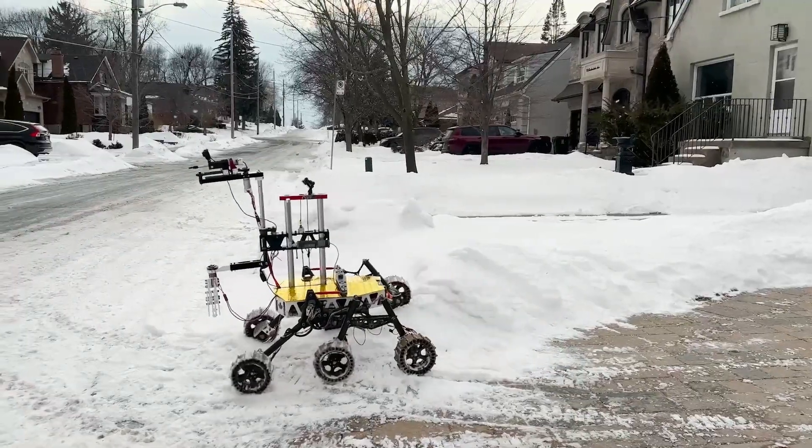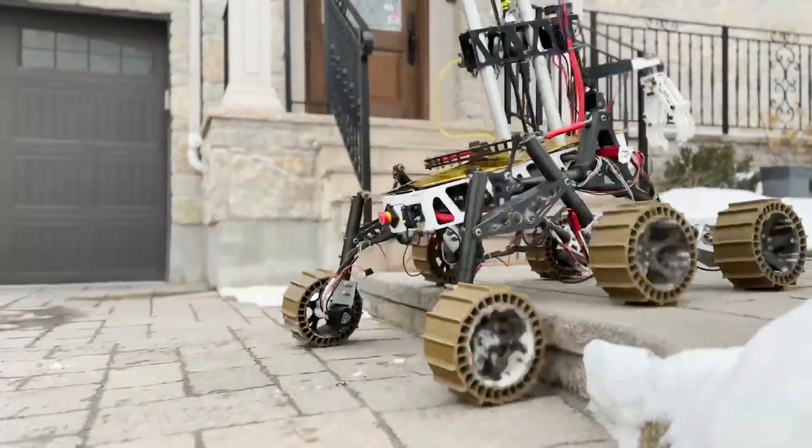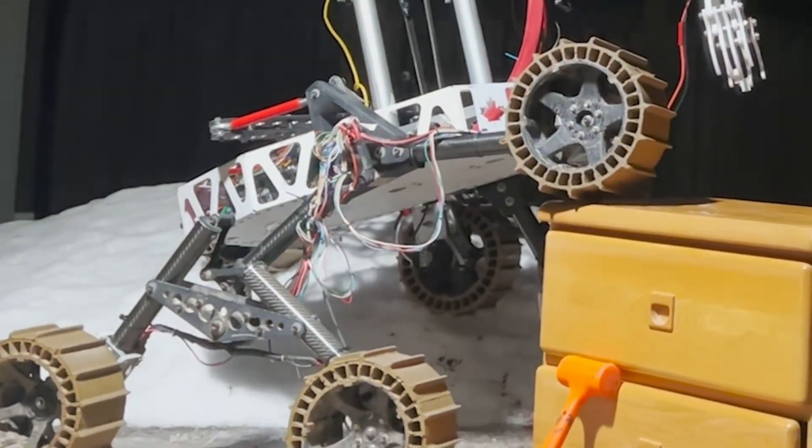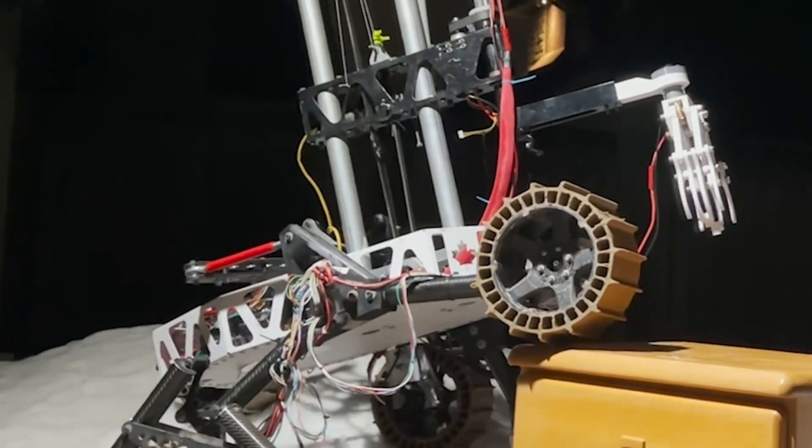In addition, our double lambda rocker bogey suspension ensures that the rover can traverse over any kind of terrain, smooth or rough. The frame is manufactured from carbon fiber tubing and aluminum linkages which provide a high strength to weight ratio.